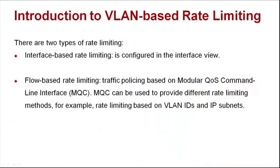Hi everyone. I'd like to show you how to configure VLAN-based rate limiting. There are two types of rate limiting: interface-based and flow-based rate limiting. Flow-based rate limiting is MQC-based traffic policing. MQC can be used to provide different rate limiting methods, for example, rate limiting based on VLAN IDs and IP subnets.